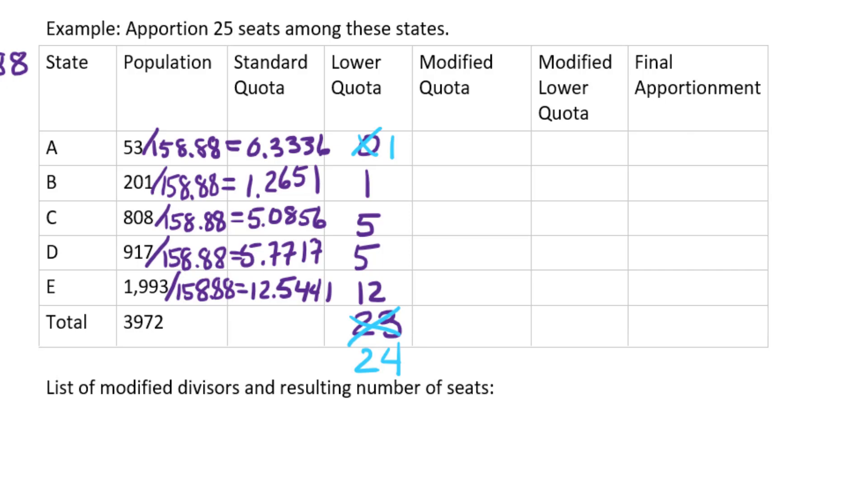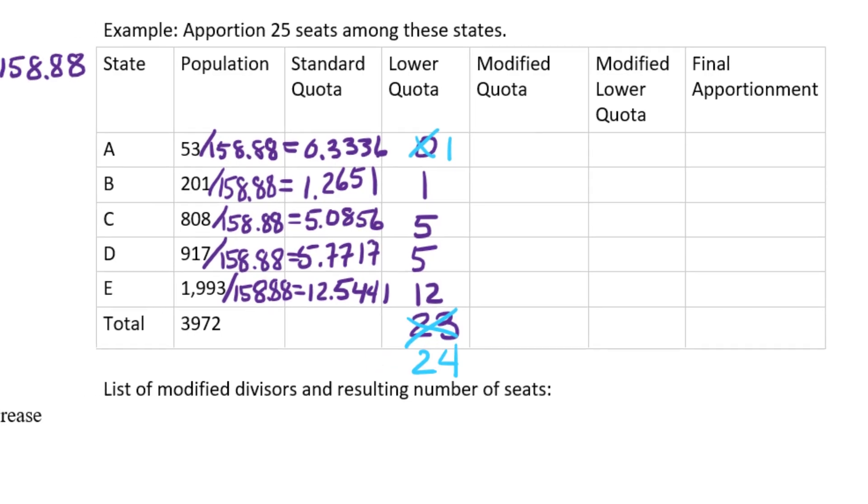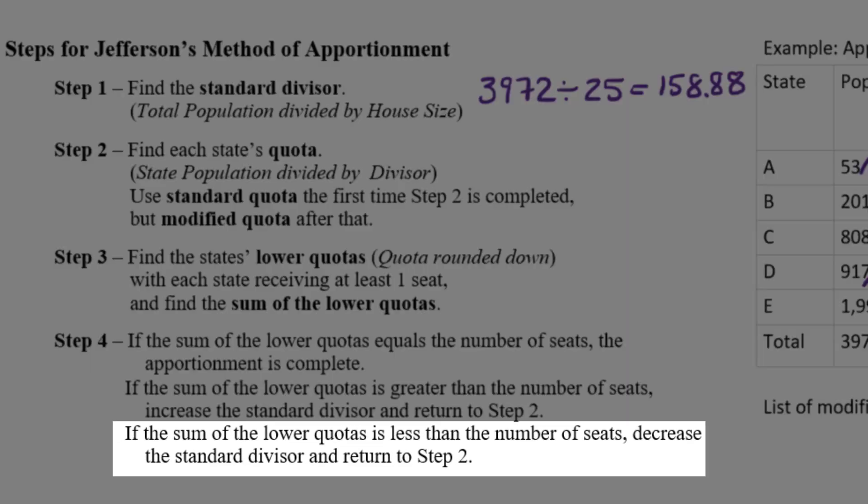Now the way that the Jefferson method deals with that is in step four, when we add up the lower quotas and get something that's not equal to the number of seats, if it's too low,